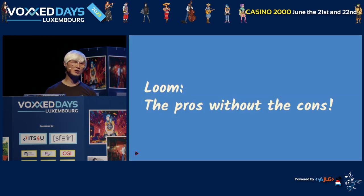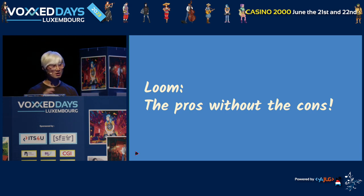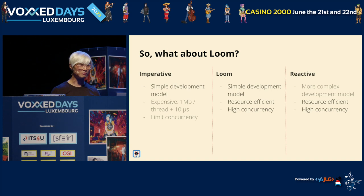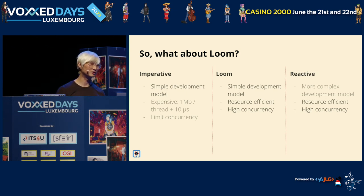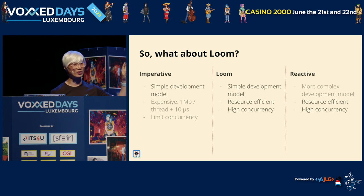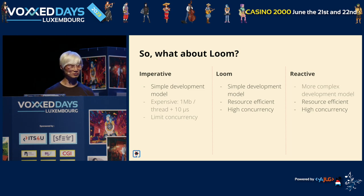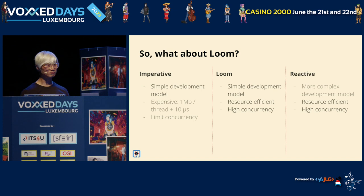So what about Project Loom? Project Loom is a project under OpenJDK. The idea of Project Loom is to try to combine the benefits of both sides - non-reactive programming is really easy to develop, and you can just implement your business logic and return data to the web UI. But we're going to do that the same way while also increasing concurrency just like reactive programming, and using less memory and fewer resources - also just like reactive programming. That's the idea and goal of Project Loom.